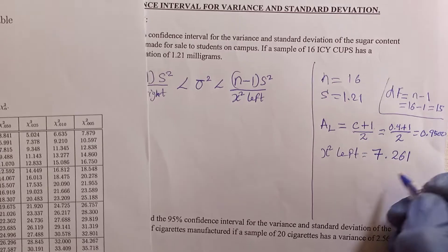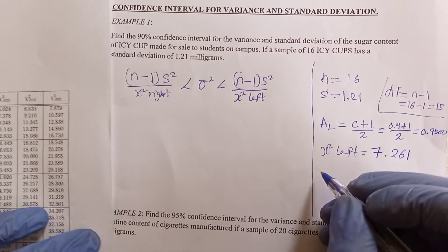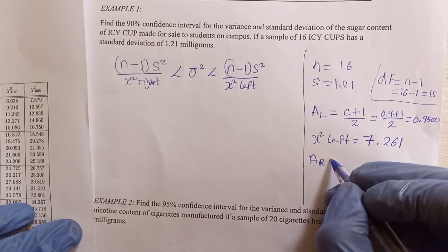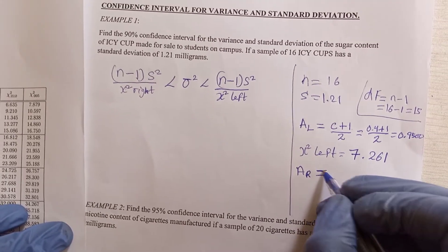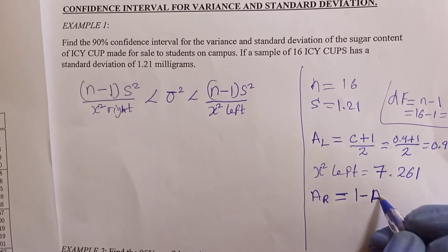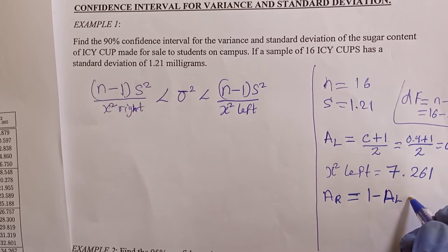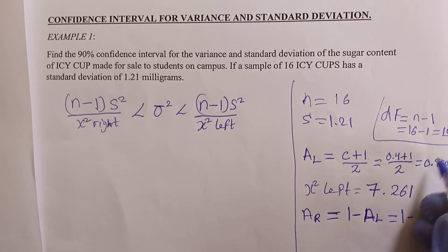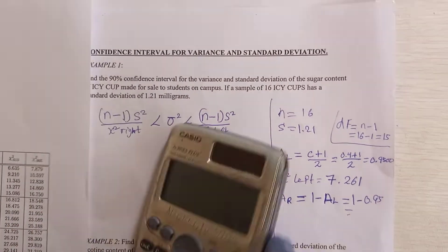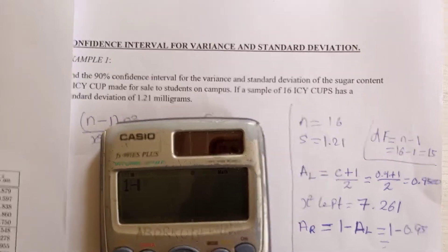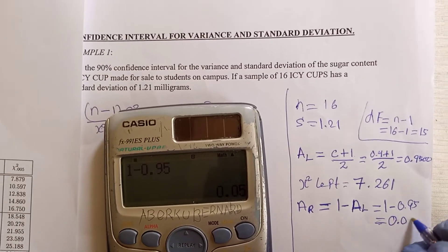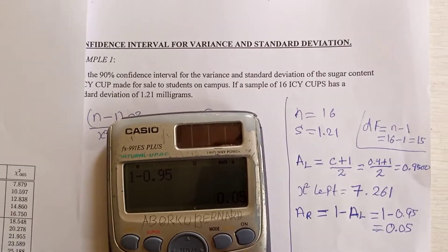Now to find chi-right, you need the area to the right. You calculate this as 1 minus the area to the left: 1 minus 0.95, which gives 0.05.